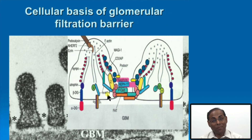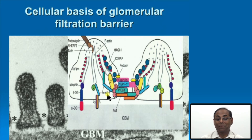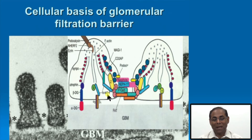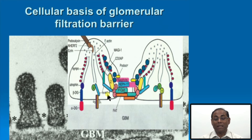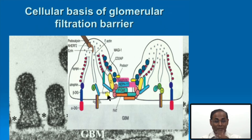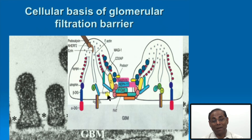Going to the molecular level — we now know certain molecules maintain the barrier of the glomerular filtration slit pore. Any abnormality in the genes that produce these molecules will ultimately affect slit pore function. We need to understand what molecules maintain the slit pore and what molecules maintain the contractile function of the podocyte. These can be broadly classified into structural molecules for contractile function and molecules important for maintaining the slit pore.